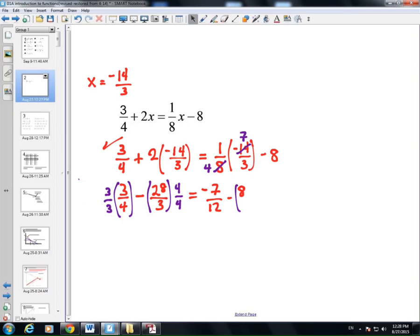So, instead of 3/4, I write its equivalent value 9/12, -128/12. Here, we have 7/12 and -96/12. And we take 9/12 and subtract 112/12 for a grand total of -103/12, negative.